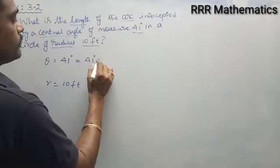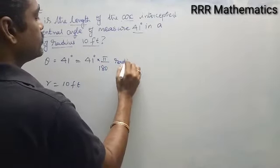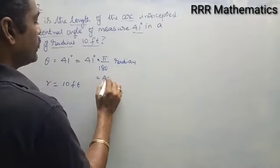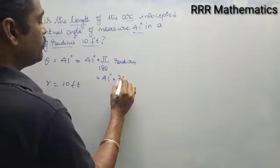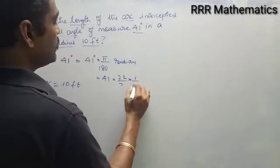We need this 41 degrees to be converted to radians. It can be written as pi by 180 for radians, so 41 degrees will be 41 times 22 by 7 times 1 by 180.